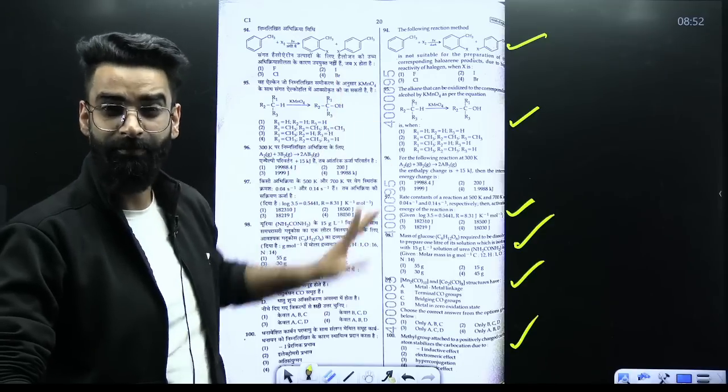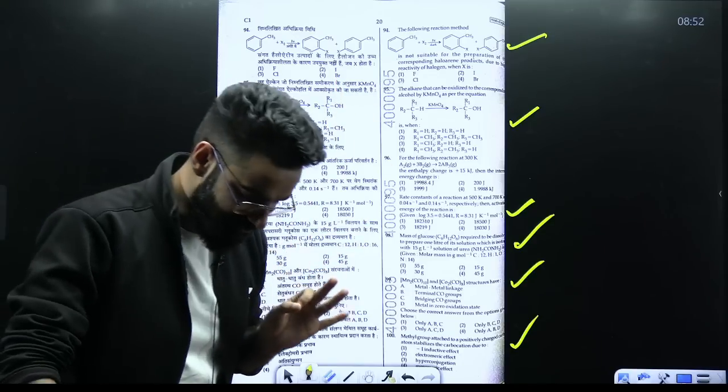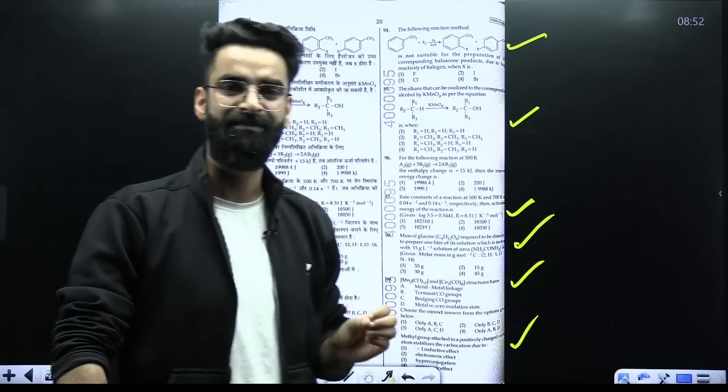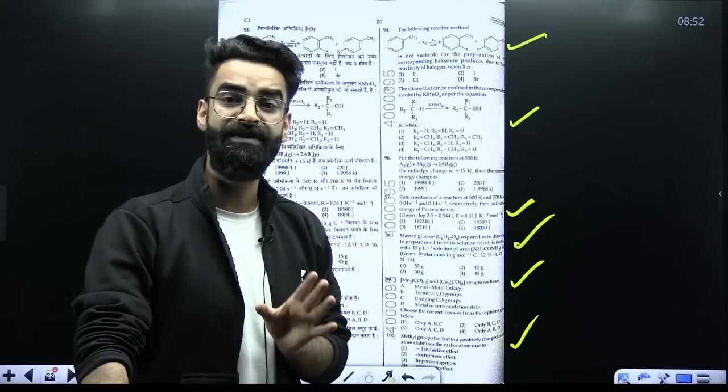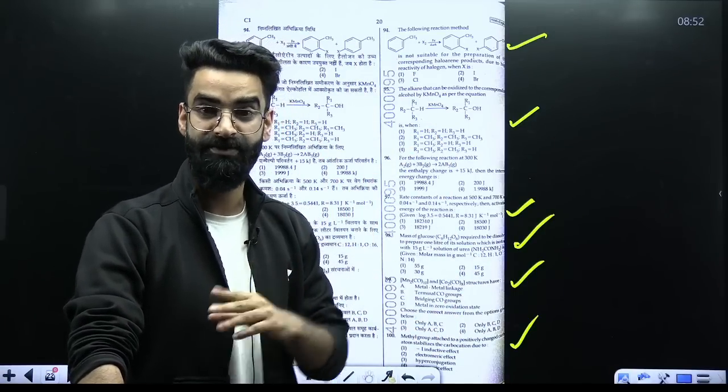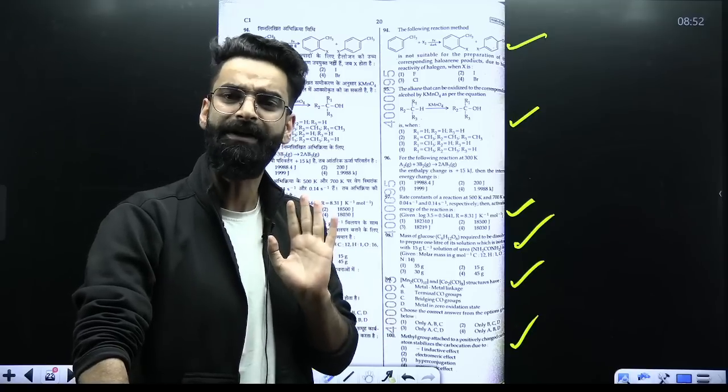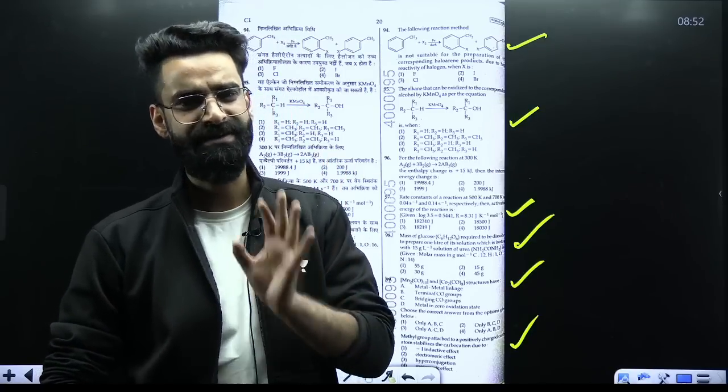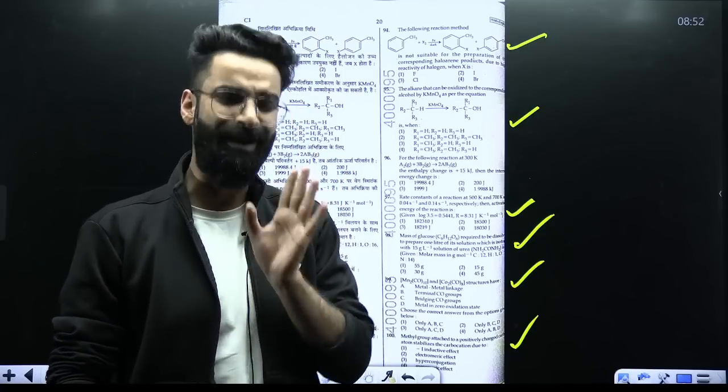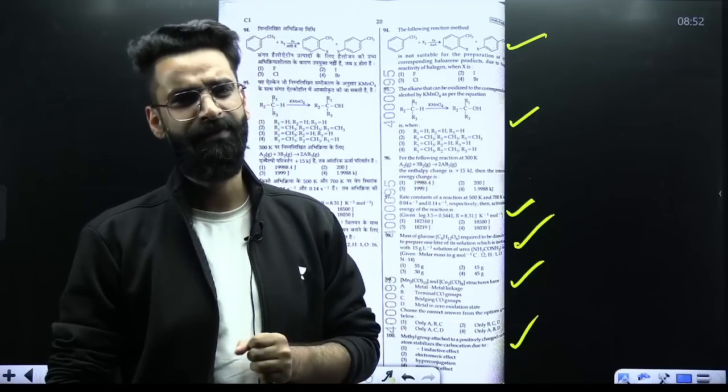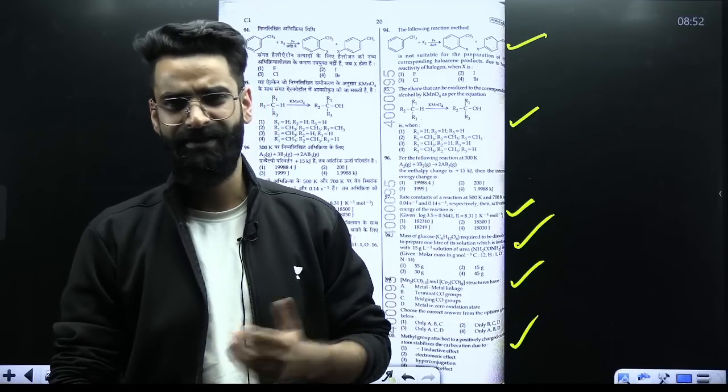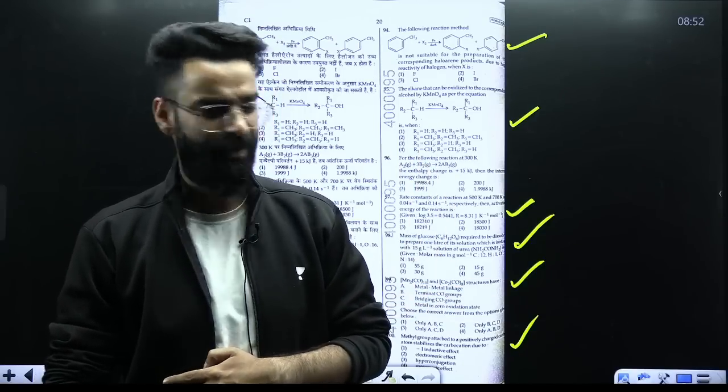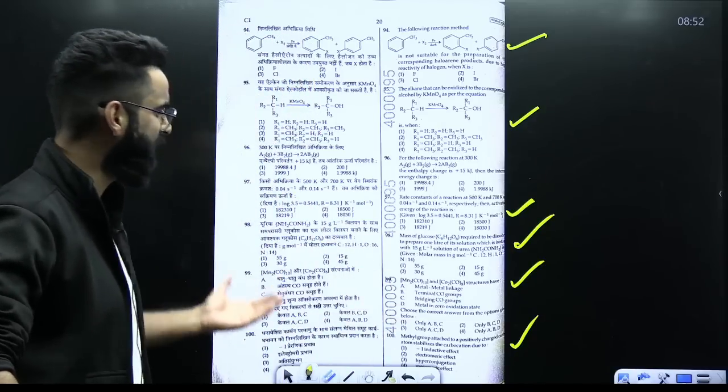So guys, from this particular paper, one thing is, I mean, that has to be taken in the mind. In this particular section from the physical chemistry part, 40% questions have been asked. So they have increased the level a bit by increasing the level of the physical chemistry questions. I mean, the calculation part was involved more in 4 to 5 questions of the physical chemistry. Rest, everything was same. Perfect. I hope you got the insights of like what kind of question paper was asked.